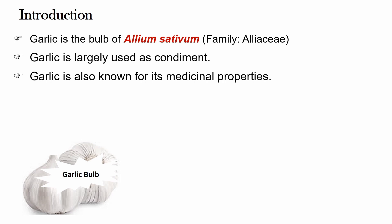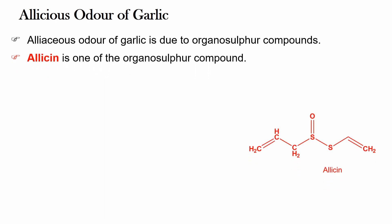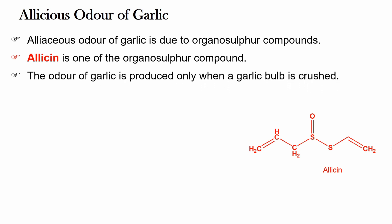Garlic is famous for its alliaceous odor. The alliaceous odor of garlic is due to organosulphur compounds, and allicin is one of the major organosulphur compounds responsible for the alliaceous odor. The point to be noted is that the odor of garlic is produced only when a garlic bulb is crushed.